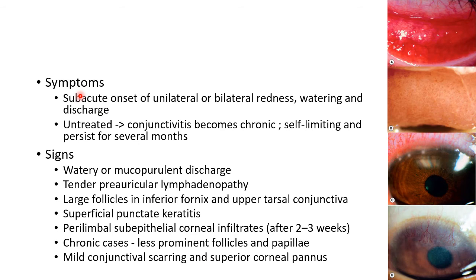The symptoms of adult chlamydial conjunctivitis include subacute onset of unilateral or bilateral redness, watering, and discharge. If untreated, the conjunctivitis becomes chronic and self-limiting, and can persist for several months.